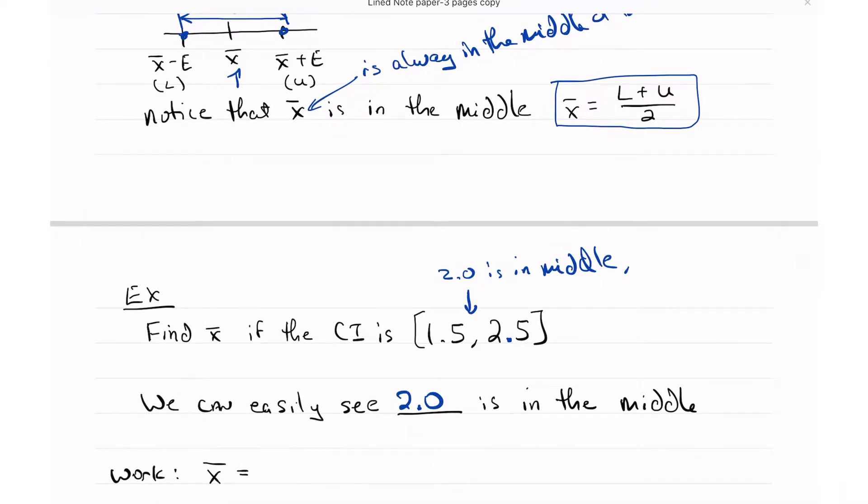But let's do the work just to see. So I take U plus L divided by 2, and that's going to be 1.5 plus 2.5 divided by 2, which is 4 over 2, which is 2.